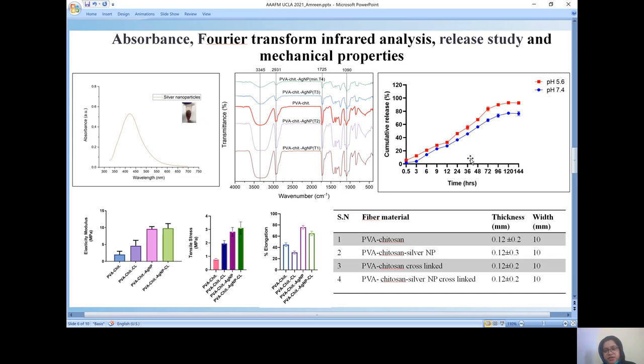Further, in order to study the release pattern of AgNPs, we did the analysis in DPBS, the phosphate buffer, which is in the 5.6 and 7.4, showing that at 5.6, that is the acidic pH, more release of AgNPs were observed. The estimation of AgNP was done by ICP-AES throughout the study.